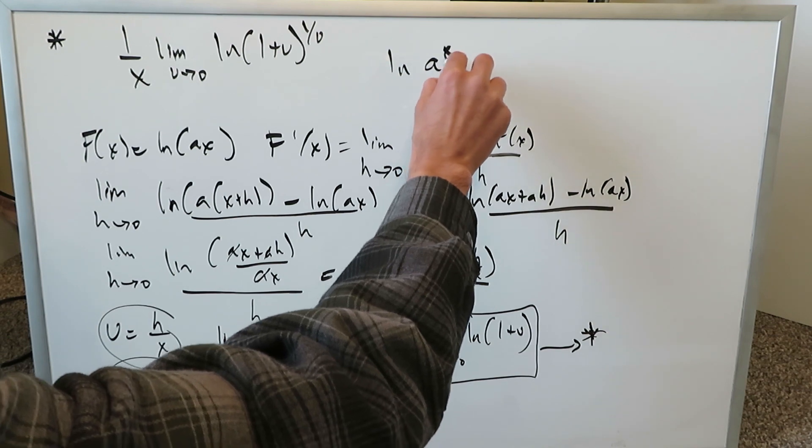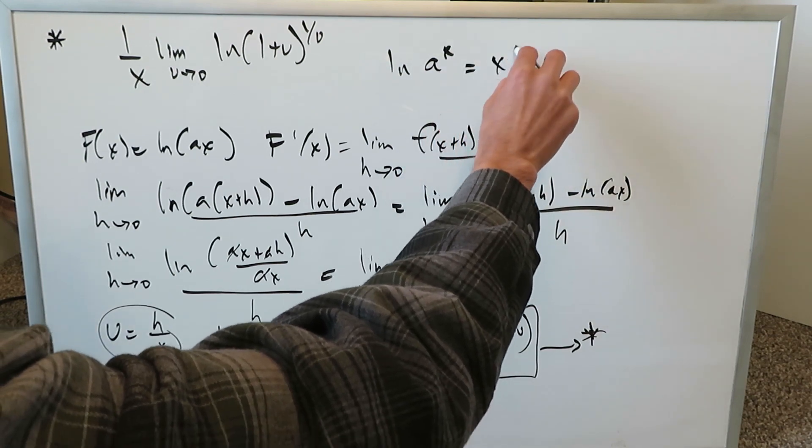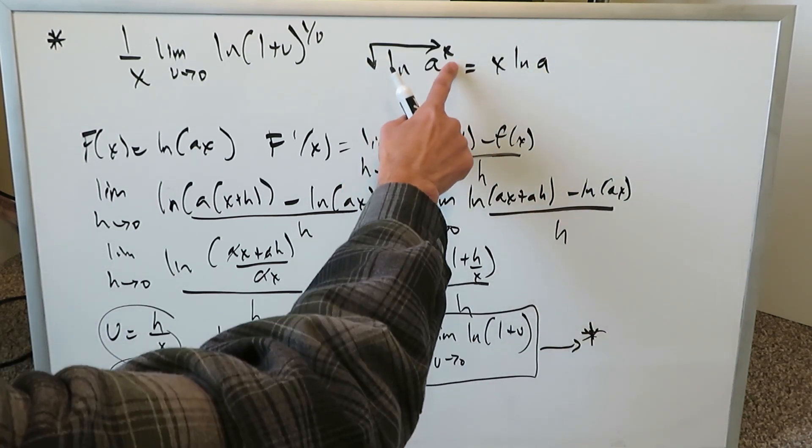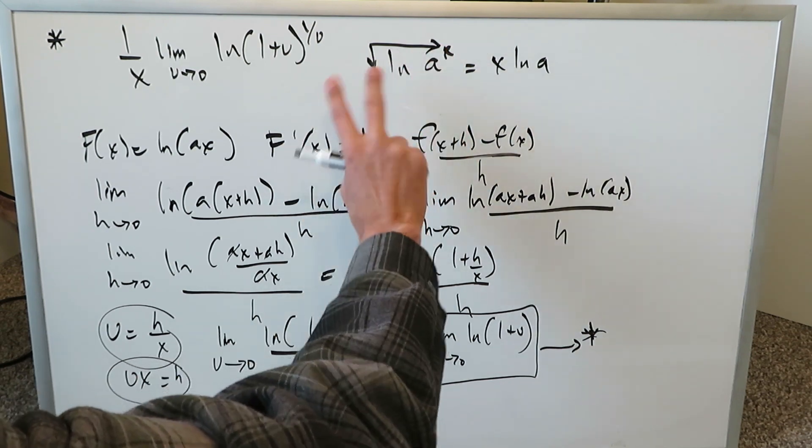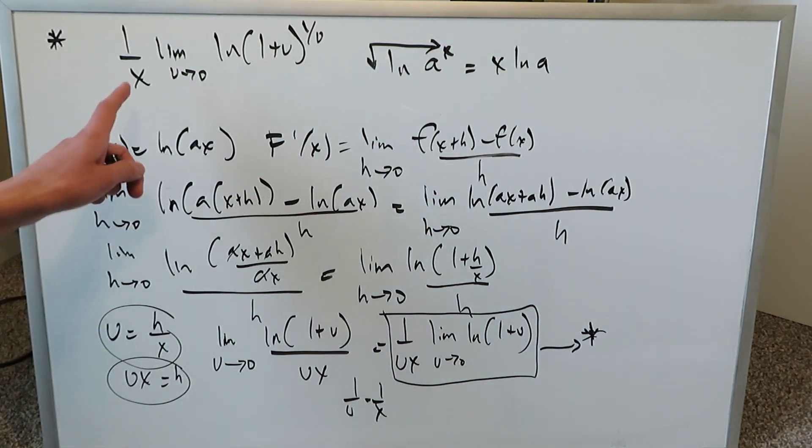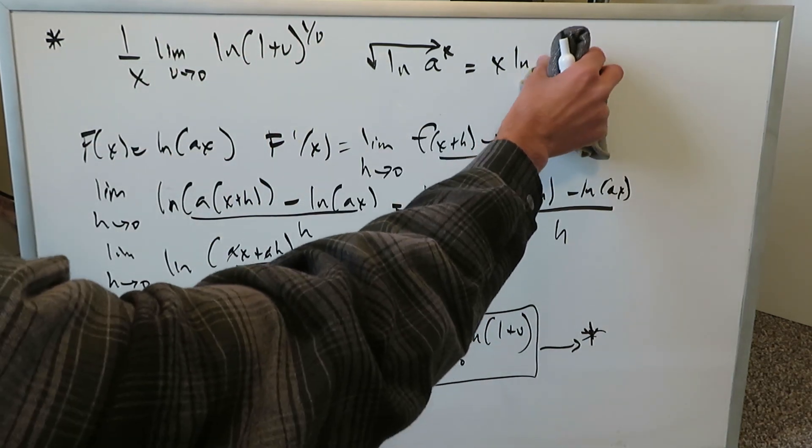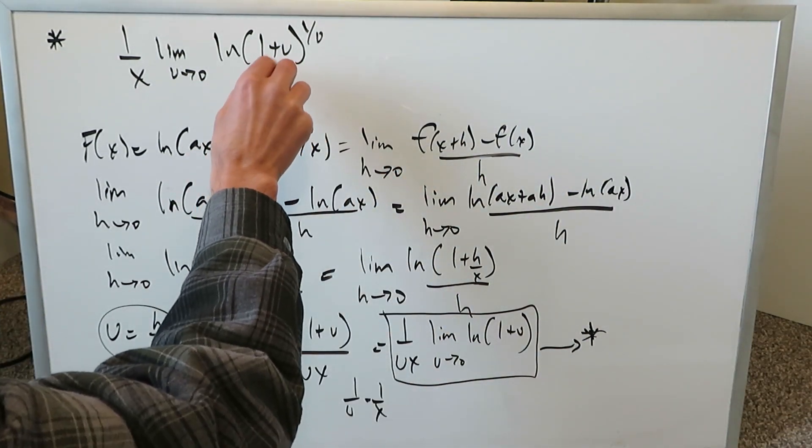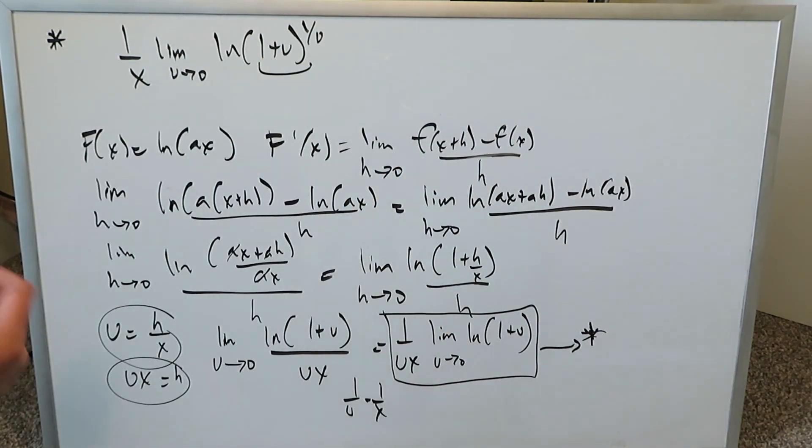Natural log a to the x is the same thing as saying x natural log a because this exponent can transfer between a coefficient and exponent position using the properties of natural log. That's all I've done over here. 1 over u transferred here as an exponent. We have to essentially look at this single limit here. This part right over here. How can we look at that?